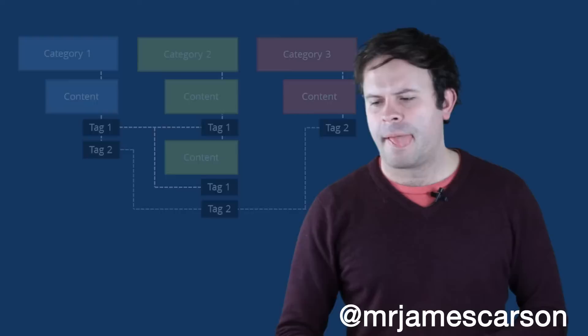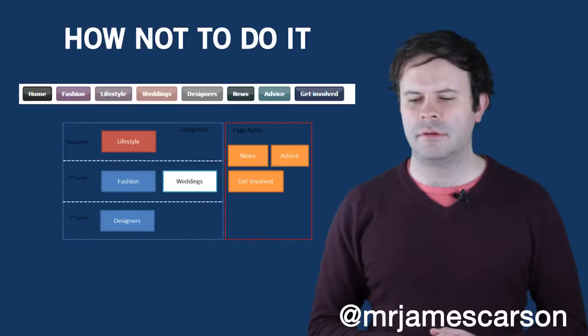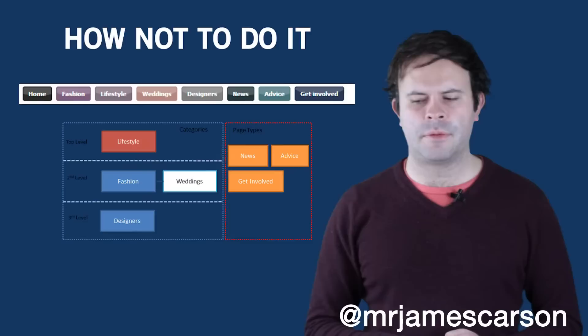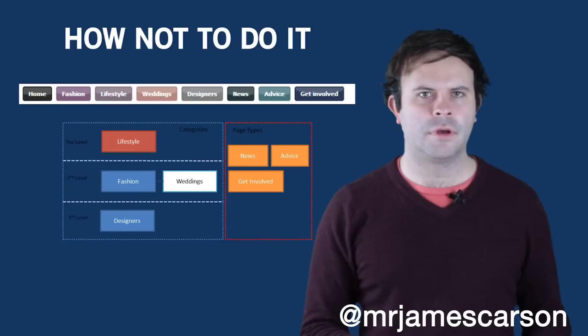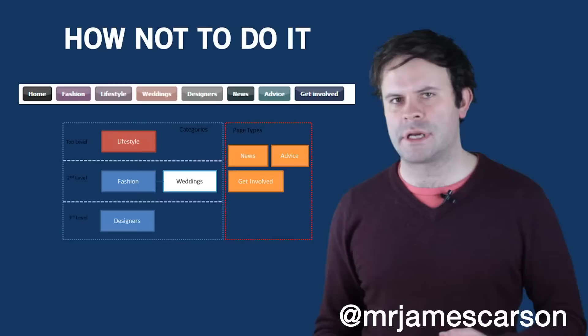How not to do it is like this — and sorry if you're from Debenhams, but this menu is quite poorly designed. It has fashion, lifestyle, weddings, designers — all of which could be grouped together — and then page types like news, advice and get involved at the same level. It also has some advisory articles that aren't tagged within the categories. So it's actually a very confusing user experience.